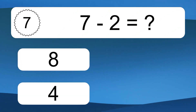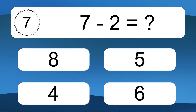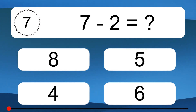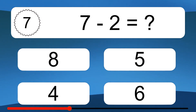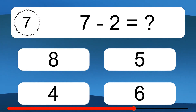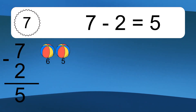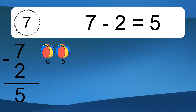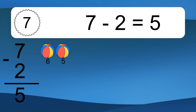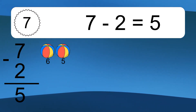7 minus 2 equals what? 7 minus 2 equals 5. Let's count it: 6, 5.